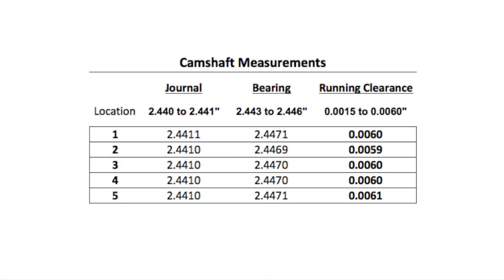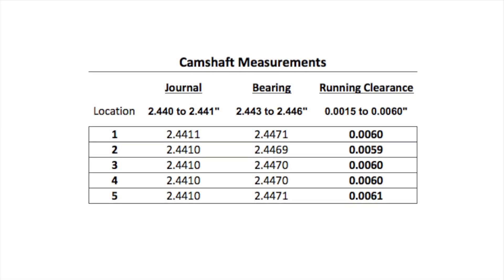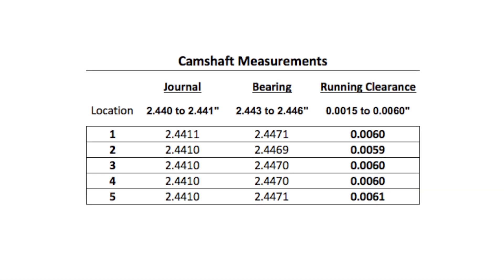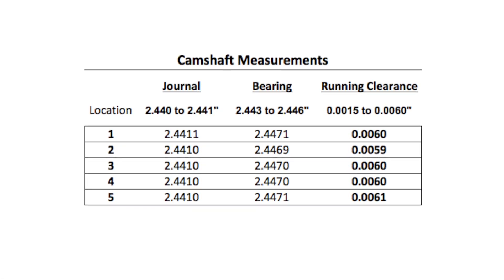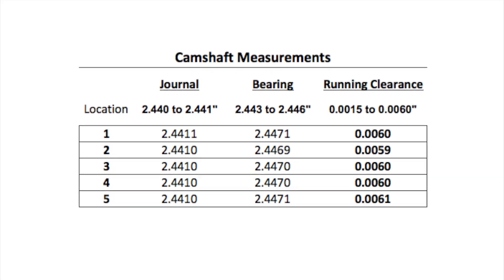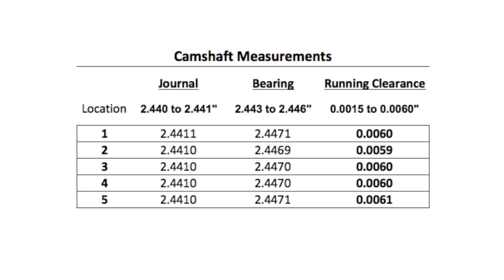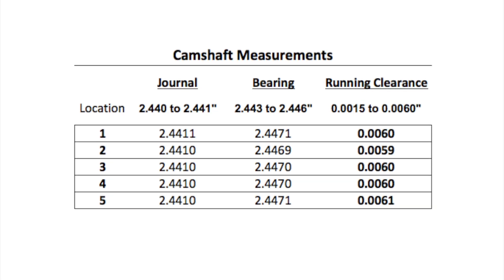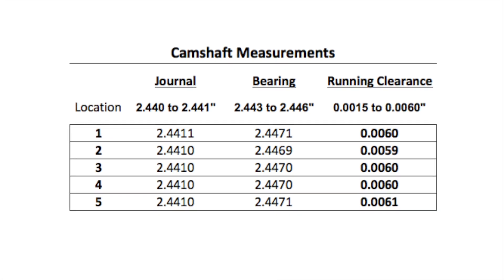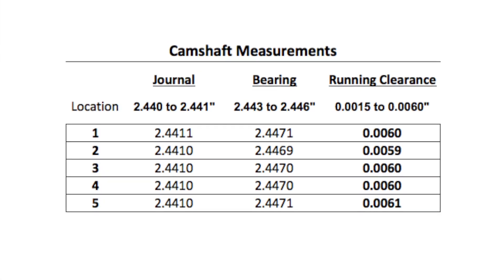The Navistar and Ford service manuals give the allowable ranges and running clearances. The camshaft journals show no wear and are at maximum diameter. The bearings are slightly over, and the combination shows the maximum running clearance. That allows for more oil volume to escape, and therefore lower oil pressure, which will only get worse over time as the parts wear.